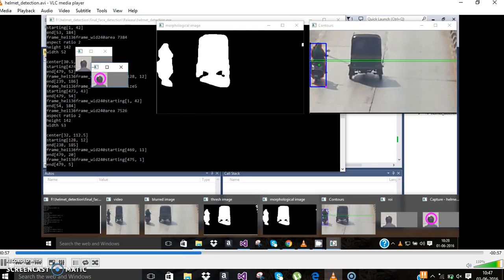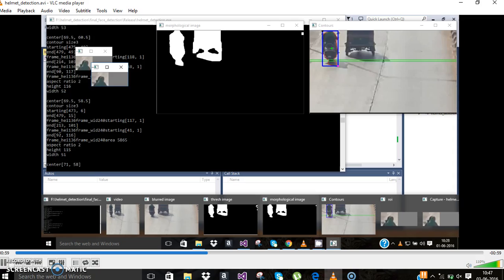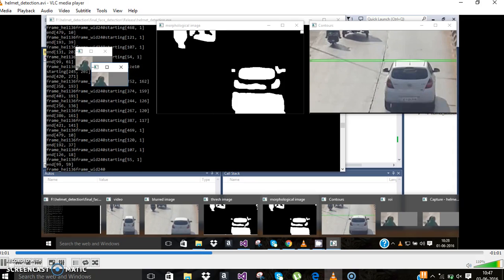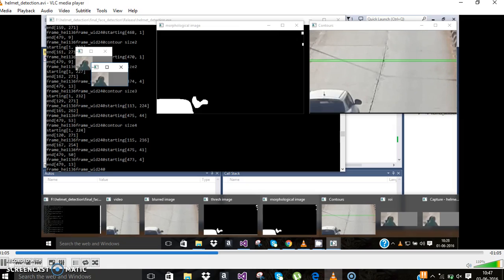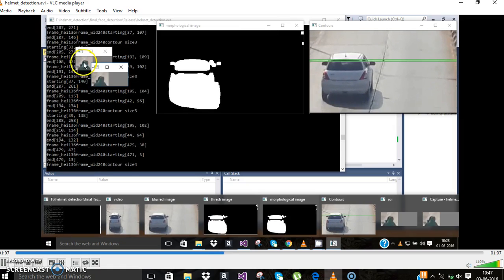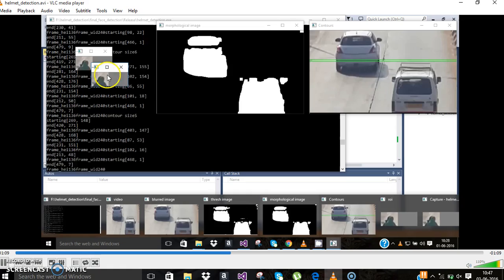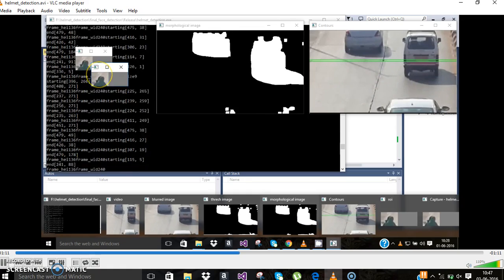You can see that the rickshaw is also not detected—only the motorcycle is detected. The car is also not detected. Here there are two seaters, so we are not able to detect the helmet.